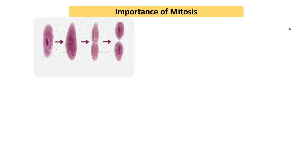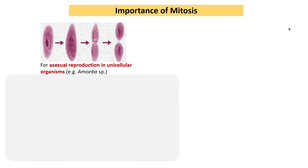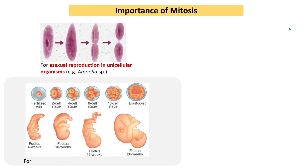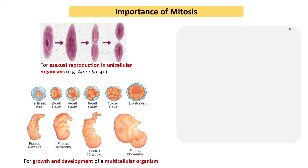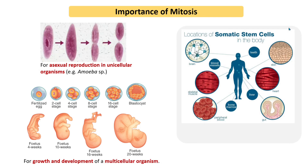The importance of mitosis includes: asexual reproduction in unicellular organisms, for example amoeba species; growth and development of a multicellular organism; and renewal and repair of tissues in a mature multicellular organism.